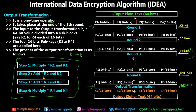In output transformation: we multiply modulo R1 and K1 (K49), then add modulo R2 and K2, then add modulo R3 and K3, and finally multiply modulo R4 and K4 (K52). After this one-time output transformation operation — which you also need to memorize in order — we get ciphertext blocks C1, C2, C3, and C4, each 16 bits long. Combining them gives the final 64-bit output ciphertext.